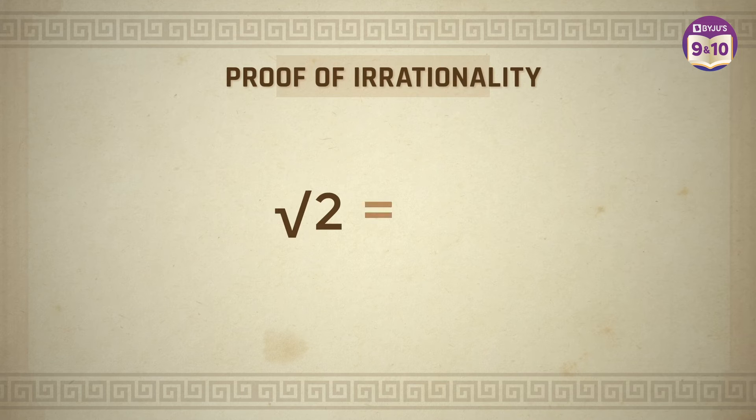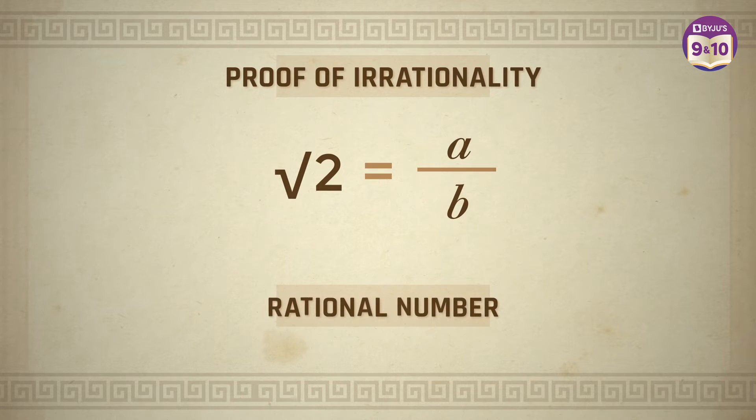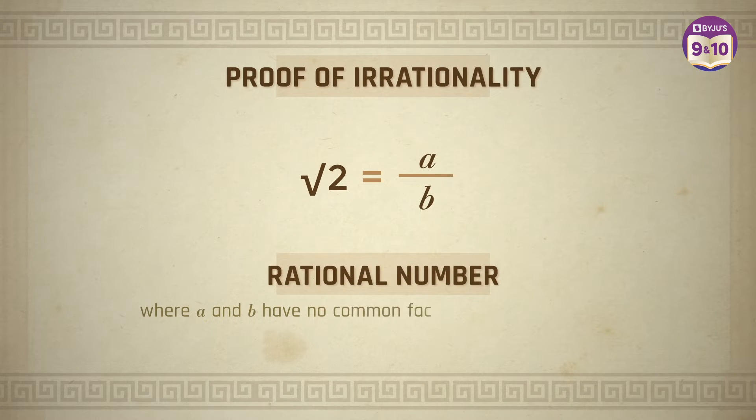Let's follow Hippasus' steps and try to prove root 2 rational. Let us assume root 2 equals a by b, which is a rational number, where a and b have no common factors, that means they are in the lowest form.